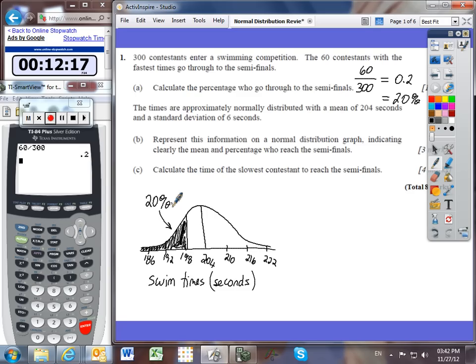Part C: Calculate the time of the slowest contestant to reach the semifinals. So these are all of the contestants who reach the semifinals. This cutoff right here must represent the time of the slowest contestant who still was part of the qualifying 20%. So I'm just going to get rid of this 198 so that I can have room to put in a K value right here.